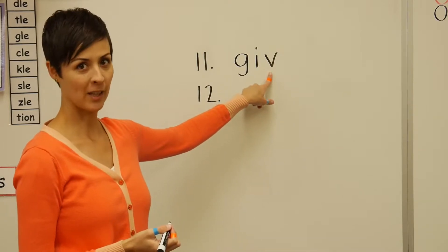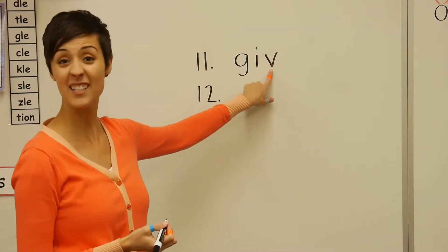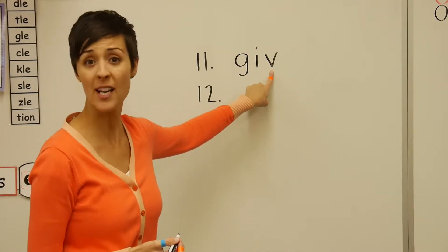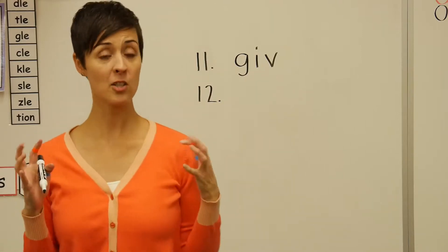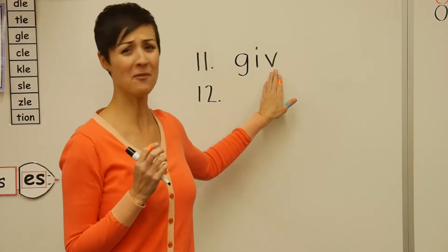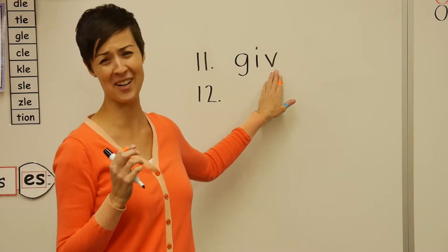But in first grade we learn V is a scaredy cat letter. You can't leave a V alone at the end of a word or he's going to have a freak out meltdown because he's so scared. No, no, no. No, I can't do it. Don't leave me alone. No, no, no. I'm scared. I'm scared.